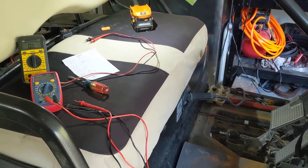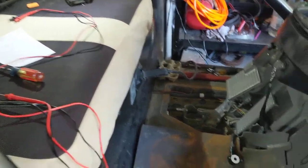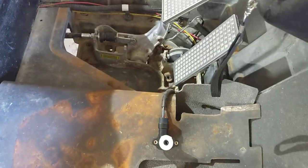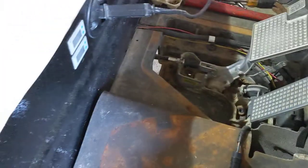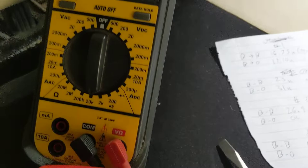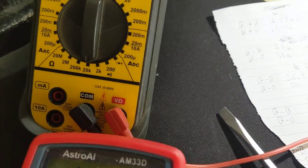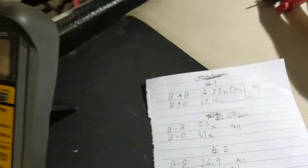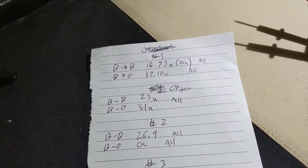I'm testing a Yamaha G29 throttle position sensor. I have the new sensor plugged in. You can see the blue, black, and orange wires. My meter here is set on 20,000 ohms. These are the readings I've been getting: sixteen to seventeen thousand.